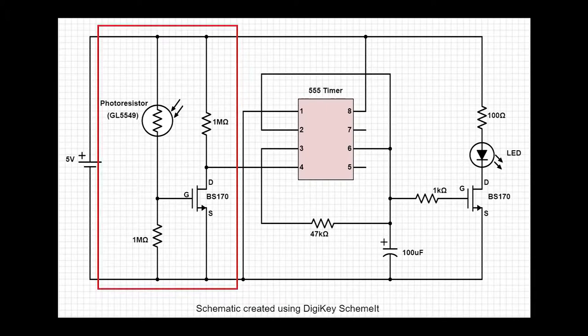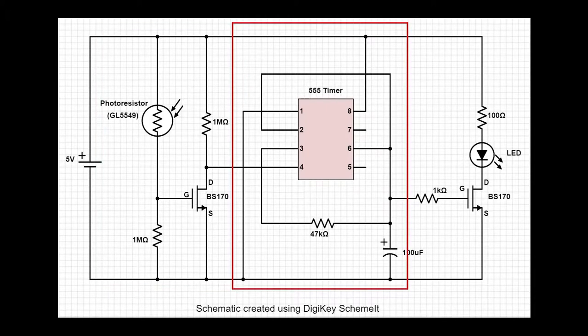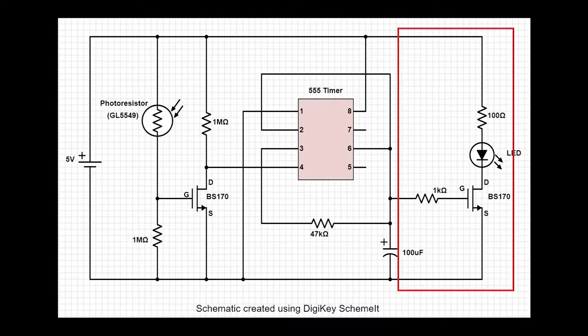The first part is the light detection circuit. The middle part controls the on and off effect of the light and the third part gives the LED the nice glowing effect.